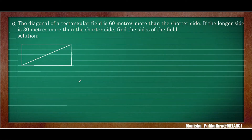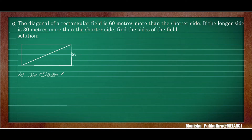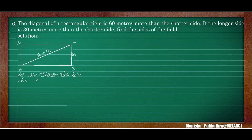Moving on to the sixth question. The diagonal of a rectangular field is 60 metres more than the shortest side. Let the shorter side be x. The diagonal AC equals 60 plus x because it is 60 metres more than the shorter side. The longer side is 30 metres more than the shorter side, so longer side AB equals 30 plus x.